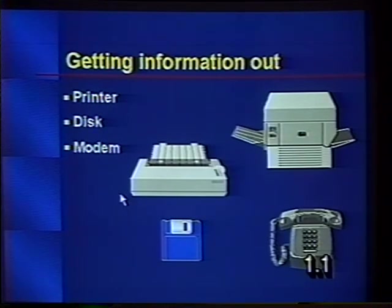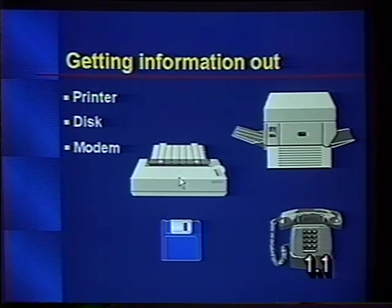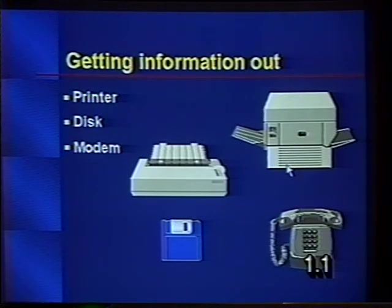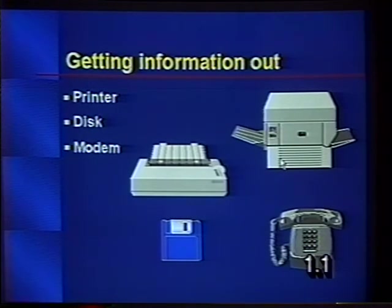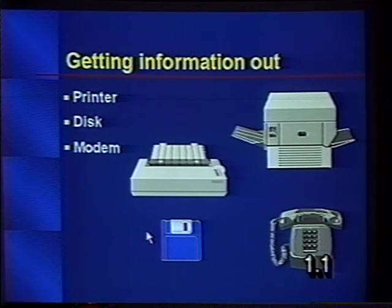How do we get information out of the computer? Usually we want to print something. There are several types of printers available today. A dot matrix printer is an impact printer, ideal for multiple copies such as invoices. Most people are now using laser jets, or a variant called a desk jet or bubble jet printer, which is less expensive than a laser and provides wonderful quality type as well as the ability to do graphics. You can also store information on a disk to share, or send information via a modem.